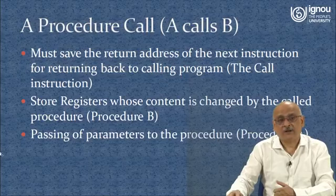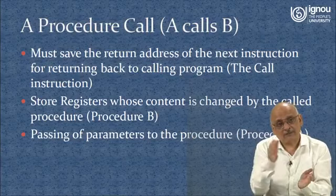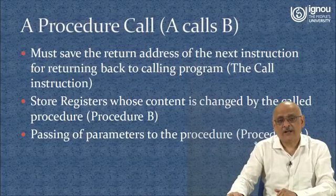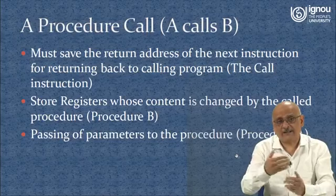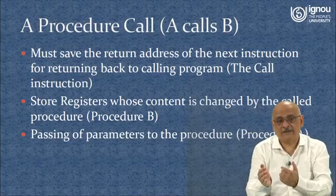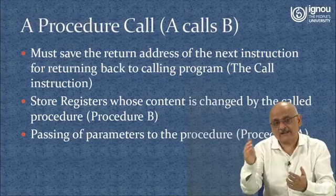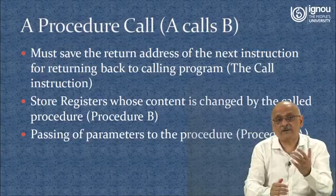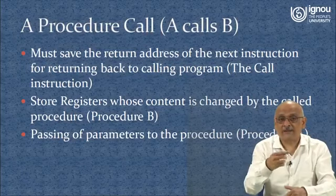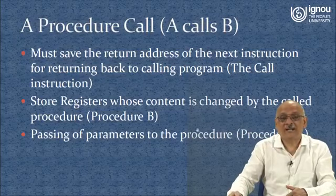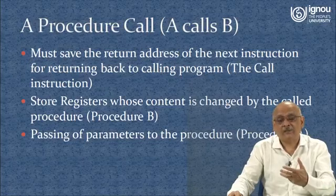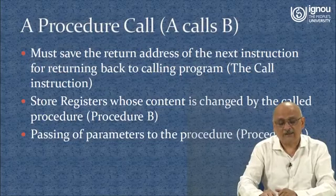The procedure B must save those register contents which will be changed by B. The programmer who wrote B knows what registers it may be changing. In assembly language, it is going to take care of that particular thing; otherwise the compiler has to. Then there is the passing of parameters to the procedure. Parameters are passed between procedures — maybe call by value or whatever. Procedure A is responsible for putting those parameters, and there has to be an agreed-upon mechanism for how parameters are passed.